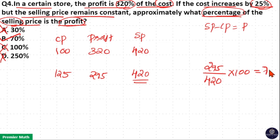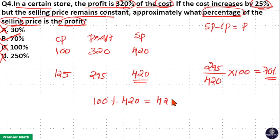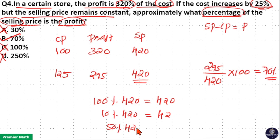295 is 70% of 420. Here, 100% of 420 is equal to 420. 10% of 420 is equal to 42. 50% of 420 is equal to half of 420, that is 210. You can see 295 is the value here. So, 295 is 70% of 420.